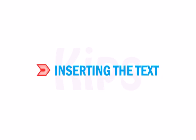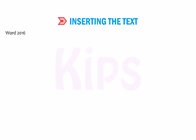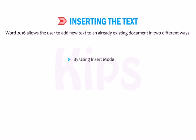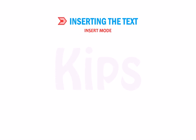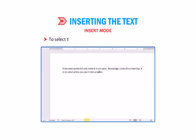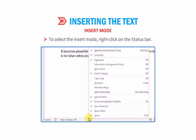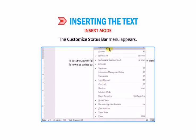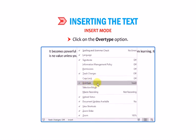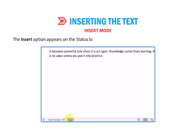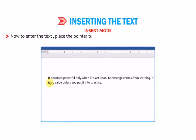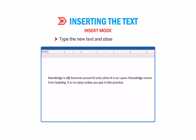Now let me tell you how to insert text in a document. Word 2016 allows the user to add new text to an already existing document in two different ways: using Insert Mode or using Overtype Mode. To select Insert Mode, right-click on the status bar. The Customize Status Bar menu appears. Click on the Overtype option. The Insert option appears on the status bar showing that Insert Mode is selected. Place the pointer to the right of the character where you want to insert new text, then type the new text.